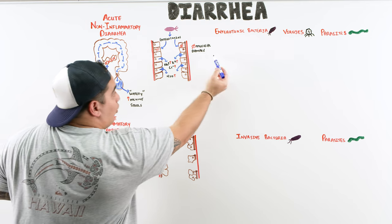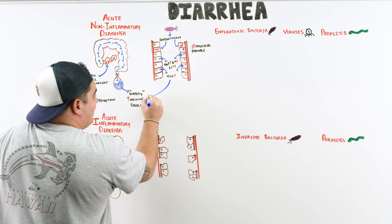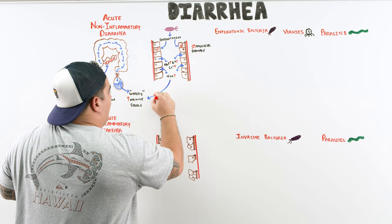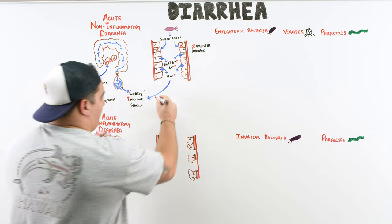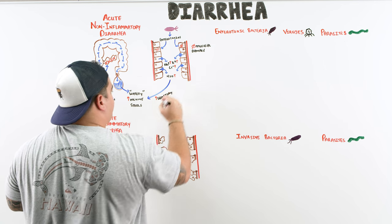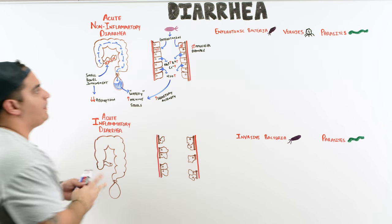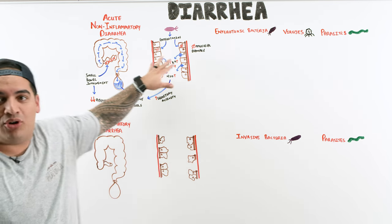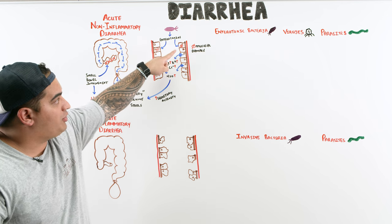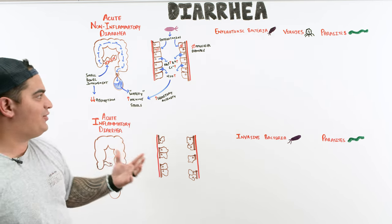With all that water and electrolytes being secreted, the stool volume becomes very significant. Absorption is impaired and there's a heavy secretory component. That's why this type is often called secretory diarrhea — there's increased secretory activity with no direct mucosal damage.